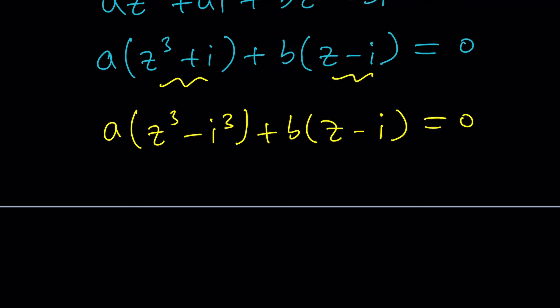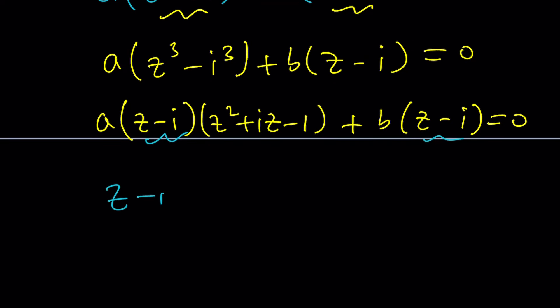And this is difference of two cubes. So I can write it as Z minus I times Z squared plus IZ plus I squared, but that's just negative one. And then now we get a common factor, which is super duper nice. And then I can now take out Z minus I. And the other factor is going to be quadratic. Let's distribute the A. AZ squared plus AIZ minus A plus B. Awesome.